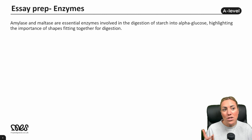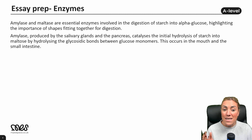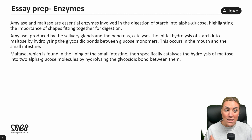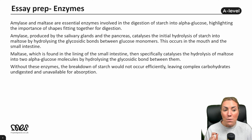Amylase and maltase are essential enzymes involved in the digestion of starch into alpha glucose, highlighting the importance of shapes fitting together for digestion. Amylase is produced by the salivary glands and the pancreas, and it catalyzes the initial hydrolysis of starch into maltose by hydrolyzing the glycosidic bonds between the glucose monomers. This occurs in the mouth and in the small intestine. Maltase, which is found in the lining of the small intestine, is a membrane-bound disaccharidase that specifically catalyzes the hydrolysis of maltose into two alpha glucose molecules by hydrolyzing the glycosidic bond between them. Without these enzymes, the breakdown of starch would not occur efficiently, leaving complex carbohydrates undigested and unavailable for absorption in the small intestine.